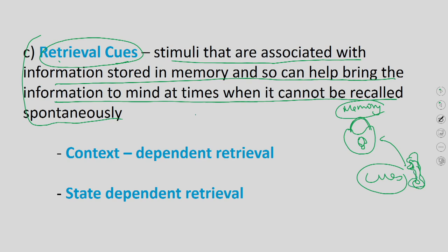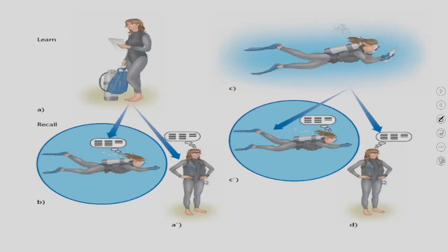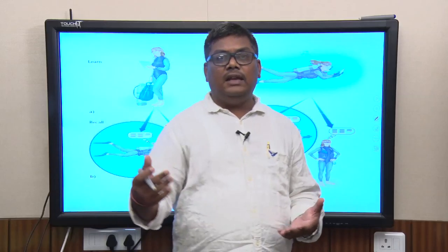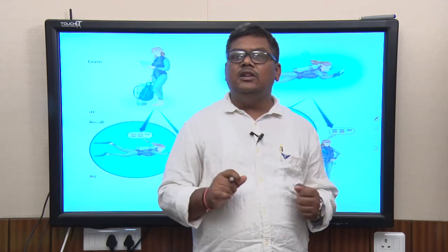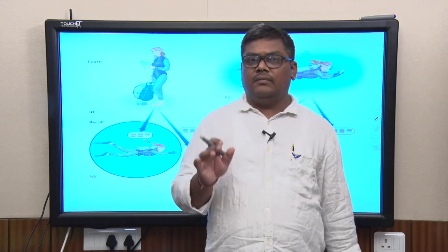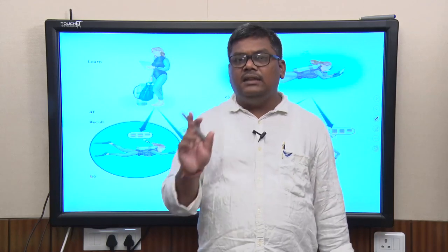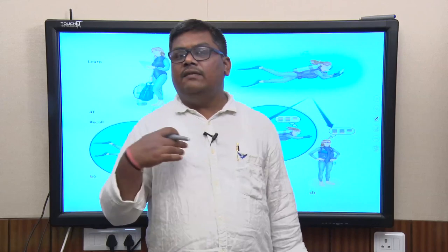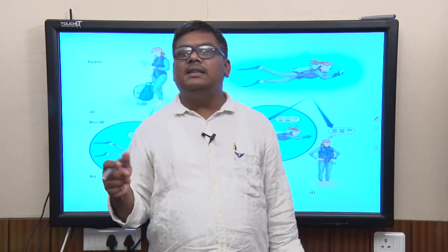These cues are responsible for how well a memory is stored in the long-term store. There are two types: context-dependent cues and state-dependent retrieval cues. In context-dependent memory, the context in which you learn information decides how well you will remember if the context remains the same. For example, giving an exam in the same room where the lecture was held leads to better recall than giving it in a different school.